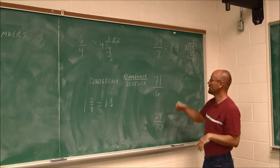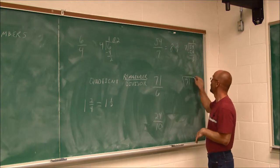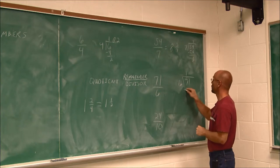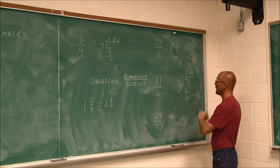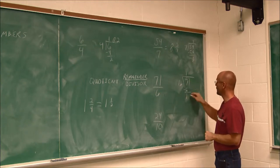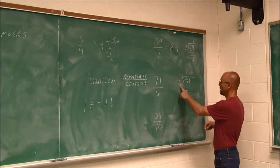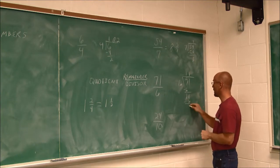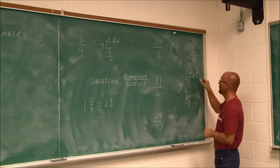Now, 6 goes into 71. We'll do this this way. 6 goes into 7 one time. So we find that difference. 7 minus 6 is 1. Bring down the 1. 6 goes into 11 just one time. And we subtract that and we get 5.